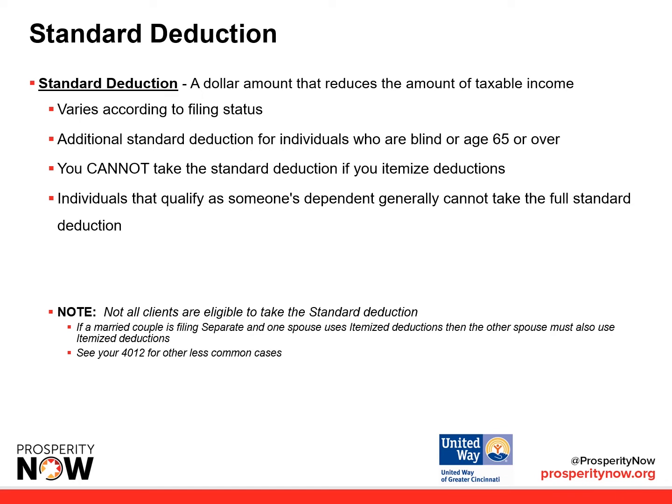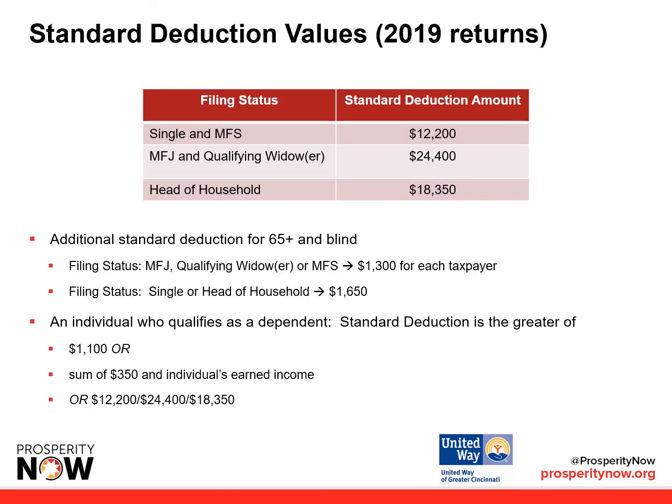See your Form 4012 for less common cases. Here are the standard deduction values for 2019 returns. You can look at the chart to see the filing status and the standard deduction amount per each filing status. There is also an additional standard deduction for those who are over 65 and blind. For an individual who qualifies as a dependent, the standard deduction is the greater of $1,100, or the sum of $350 and the individual's earned income, or the standard deduction amounts as listed on the filing status chart.